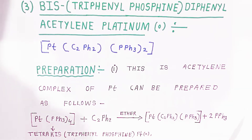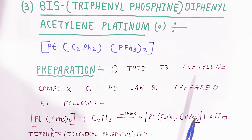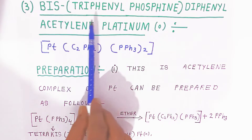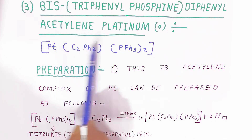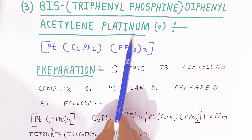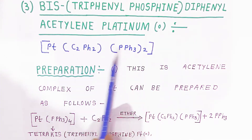Hello, welcome to Bhunanath Academy. In organometallic chemistry, we are going to see the third type of compound, called bis triphenyl phosphine diphenyl acetylene platinum. This is a complex structure.